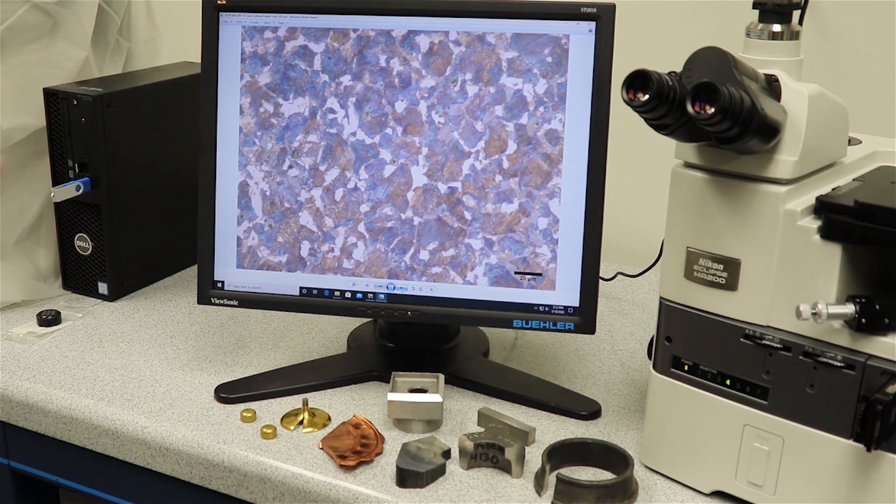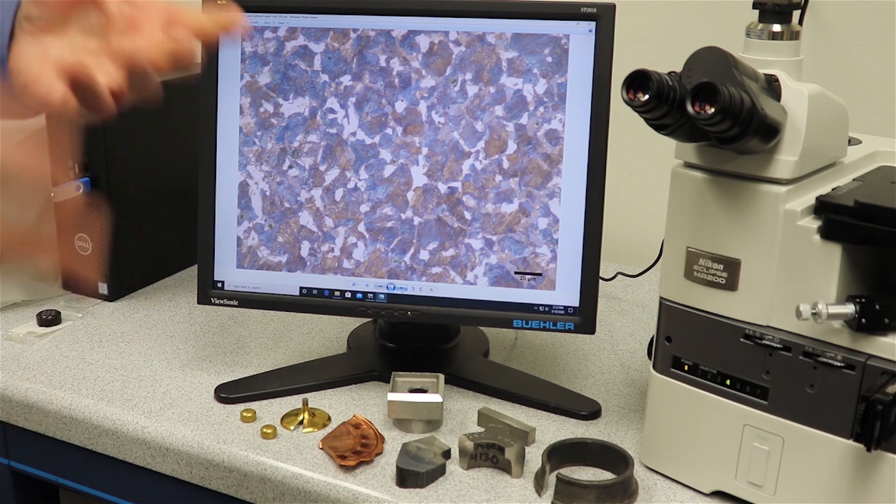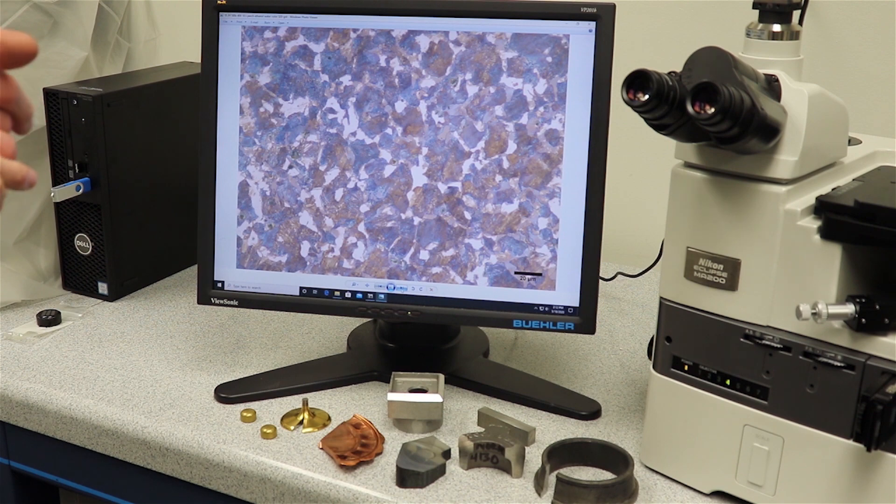So a variety of materials are amenable to electropolishing. Depending on what you're working with, contact Buehler for further information. Electropolishing is really a great way to get a good microstructure in a very short period of time.